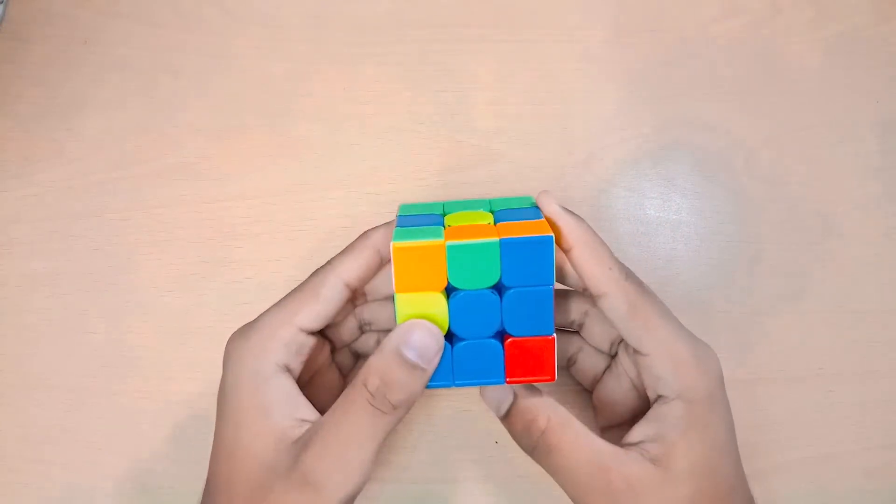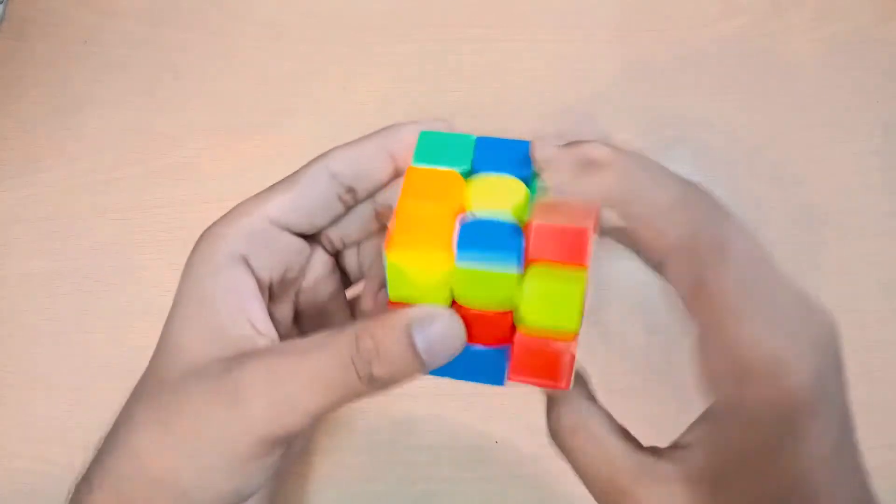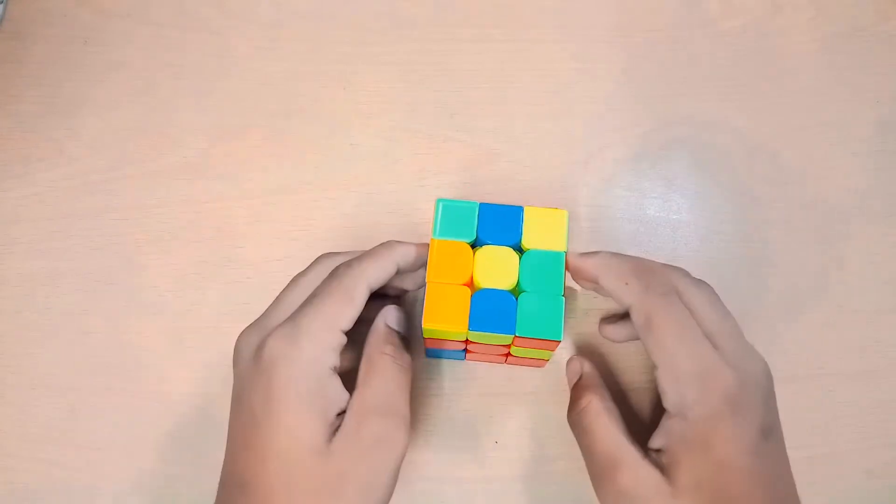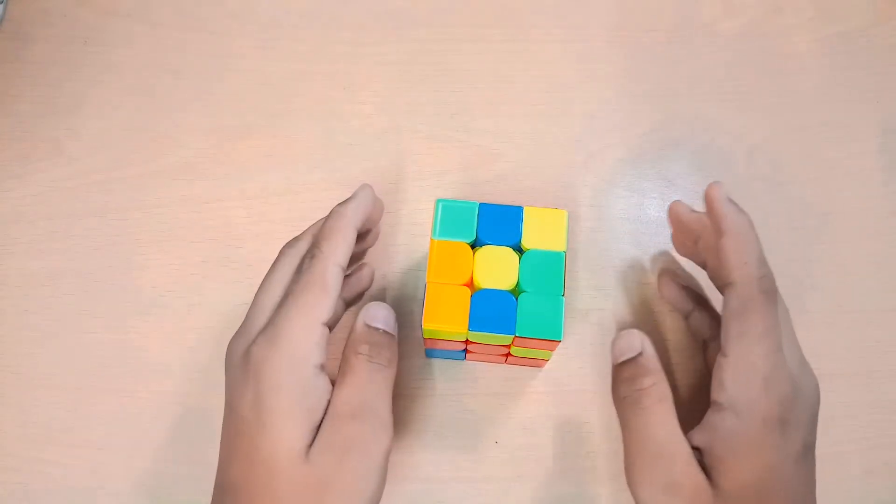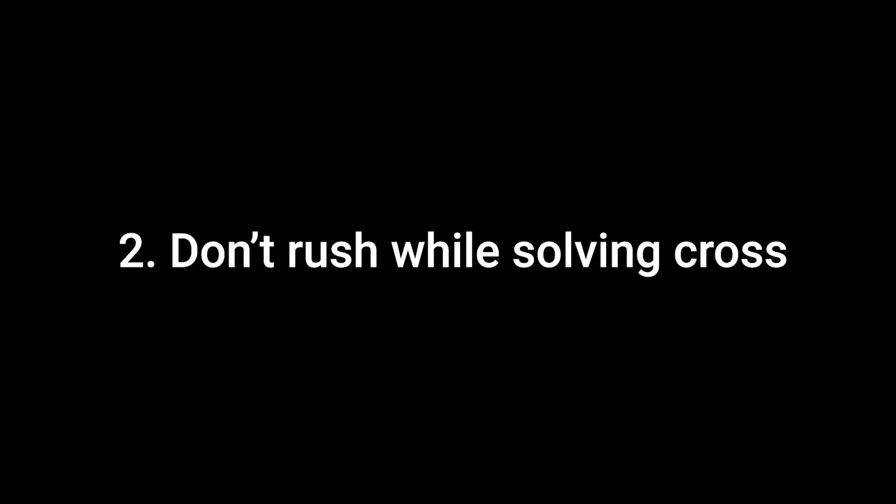Instead of that, you can normally solve your cross. For example, if this is my four move cross solution, I can just do that while looking ahead to some other pairs, and my cross will be okay, and so will be my first pair because I'll have a smooth transition from cross to F2L.